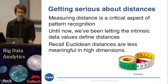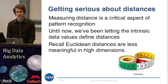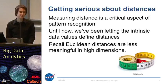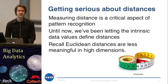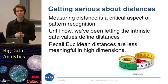Measuring distance is a really critical part of pattern recognition — not just for local methods, but for all sorts of parametric methods for classification and regression. Until now, we've been letting the data itself define our distances, but there are challenges with this. Additionally, recall that Euclidean distances are less meaningful in high dimensions anyway. Even if our data is perfectly isotropic and uncorrelated, those Euclidean distances are going to be less valuable as we move to high dimensions, just because of the curious geometry of these high-dimensional spaces.